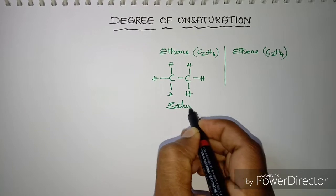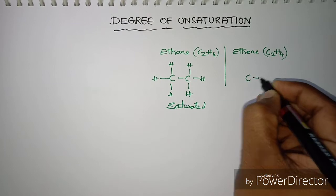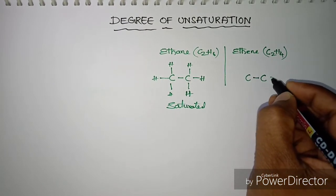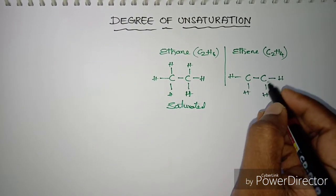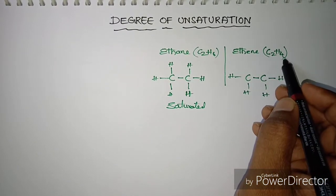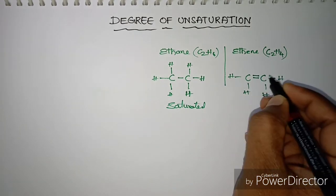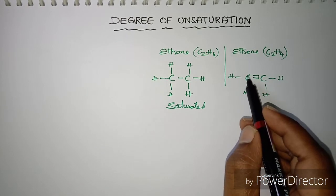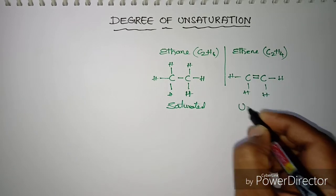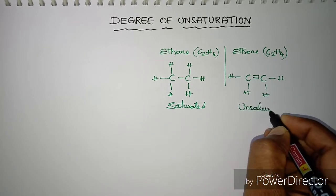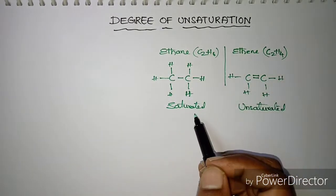Now coming to the case of ethene. In ethene the two carbons have only four hydrogens available — the available hydrogens are only four. So due to the unavailability of hydrogens, it tries to make a pi bond. This pi bond is a result of unavailability of hydrogens, therefore we can call it unsaturated — this is an unsaturated compound.